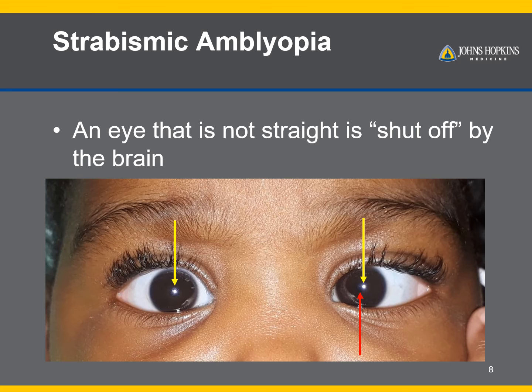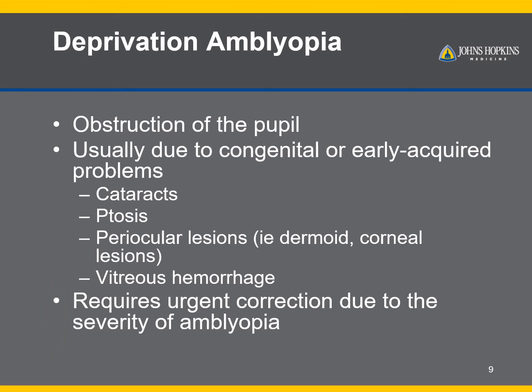In this example, notice that the light reflection in the eye is not symmetric. The red arrow shows how much the light reflection is off from the center of the pupil in the left eye. Deprivation amblyopia is the least common and most severe type of amblyopia.